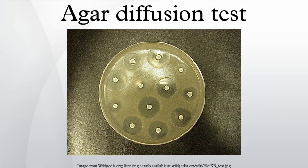If the compound is effective against bacteria at a certain concentration, no colonies will grow where the concentration in the agar is greater than or equal to the effective concentration. This is the zone of inhibition. This, along with the rate of antibiotic diffusion, are used to estimate the bacteria's sensitivity to that particular antibiotic.